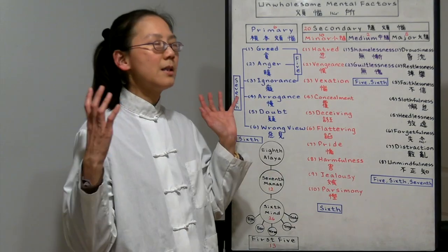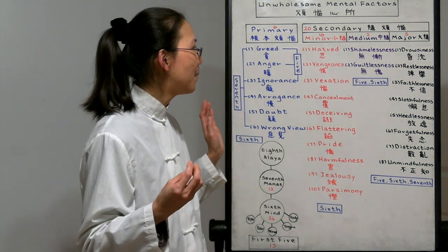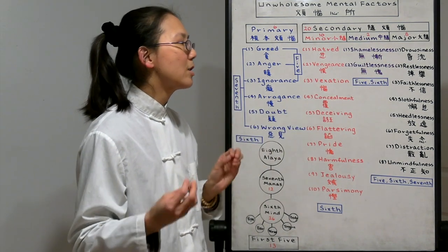The sixth consciousness, because the mind is very powerful, it can think a lot. It's capable of all 26 unwholesome mental factors. So the one that really creates karma is really our mind consciousness.